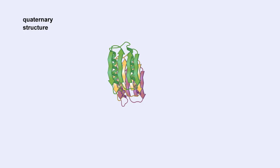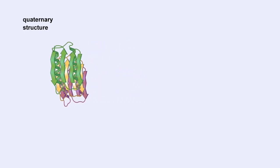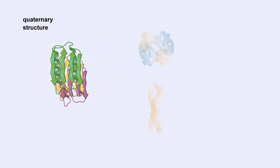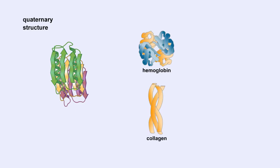Chemical interactions between the side groups of the polypeptide chains maintain the three-dimensional structure of the protein. Examples of proteins with quaternary structure include hemoglobin and collagen.